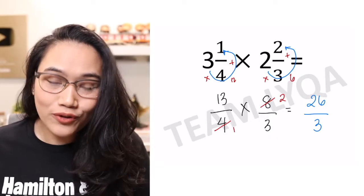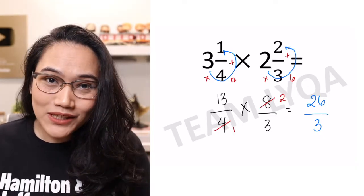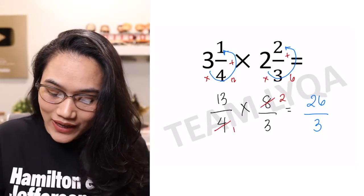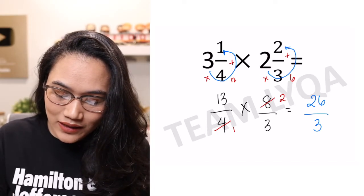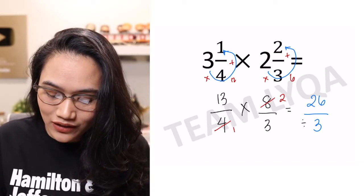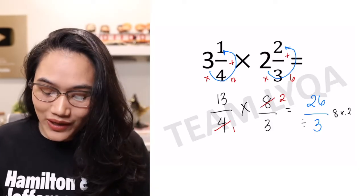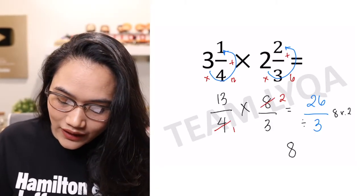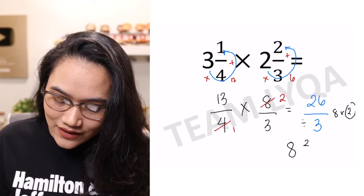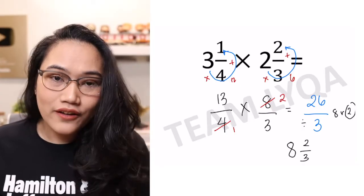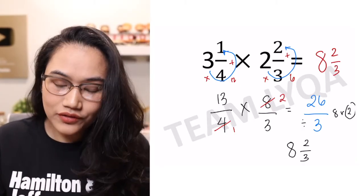Now of course, teachers don't accept that form, and if we have an exam it should be in mixed number form. So what we're going to do is divide 26 by 3. 26 divided by 3 gives you 8, remainder 2. So we copy the whole number 8, then the remainder 2 goes on top over 3. The final answer is 8 and 2 over 3.